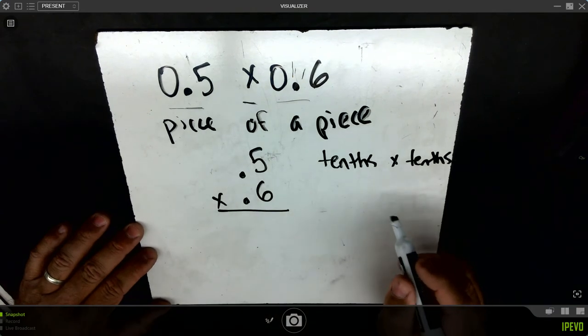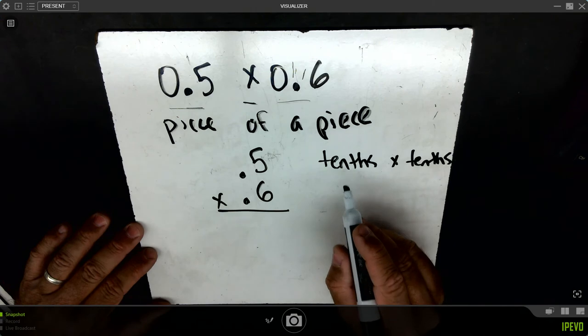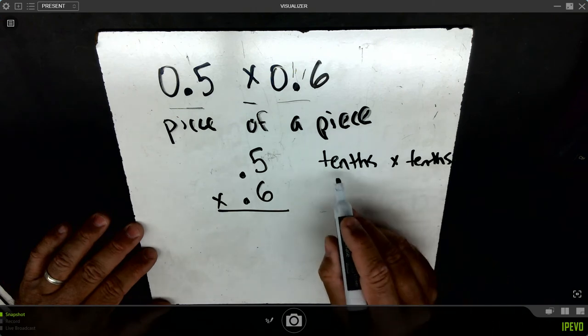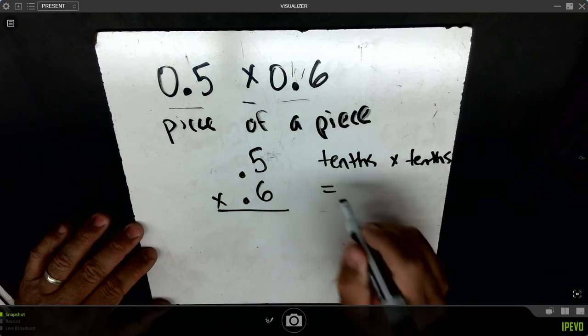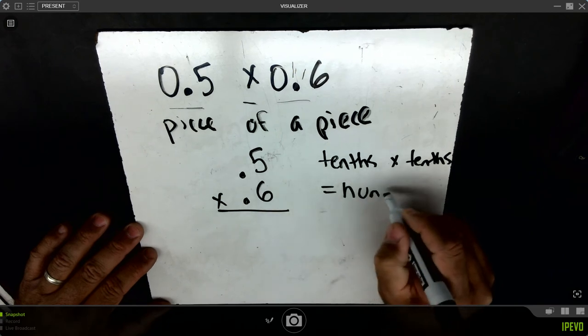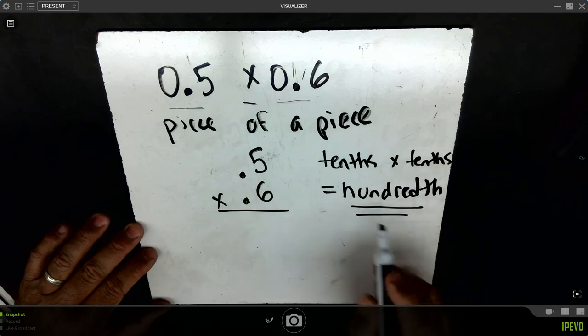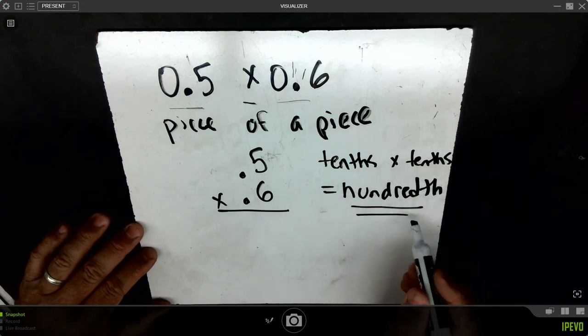Think about multiplication patterns that you know with whole numbers. I know that ten times ten is a hundred, which means a tenth times a tenth is going to equal a hundredth. Our answer will become smaller. Tenths of tenths will give us hundredths.